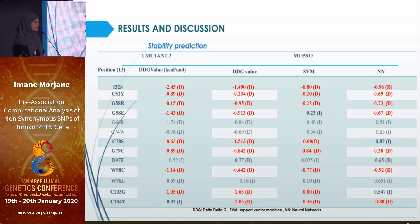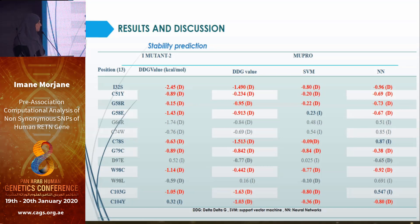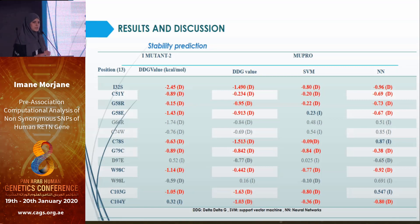For stability prediction analysis, we used two tools: iMutant and MuPro. MuPro used three different algorithms, and we set a criterion selecting for subsequent steps only those positions predicted to decrease stability by at least three tools.